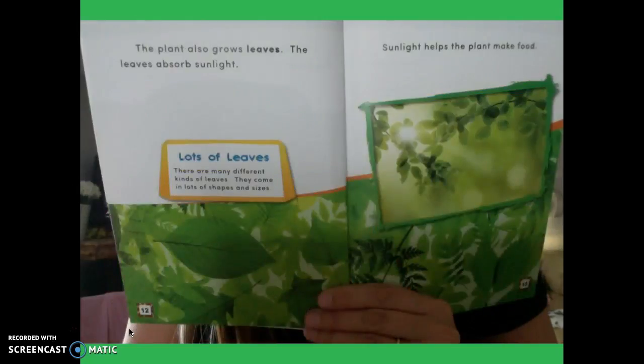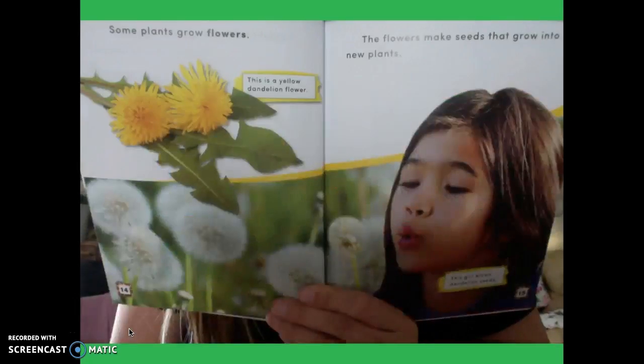The plant also grows leaves. The leaves absorb sunlight. Lots of leaves. There are many different kinds of leaves. They come in lots of shapes and sizes. Sunlight helps the plant make food. Some plants grow flowers. Ready? Let's read this caption together. This is a yellow dandelion flower. Good job.